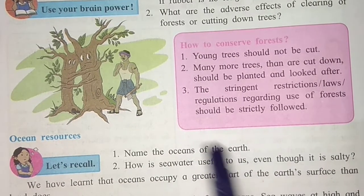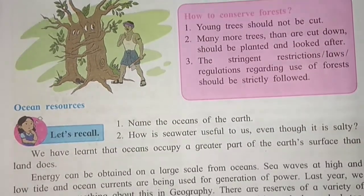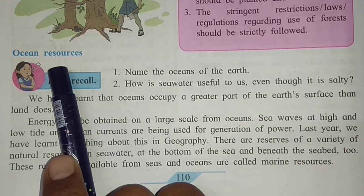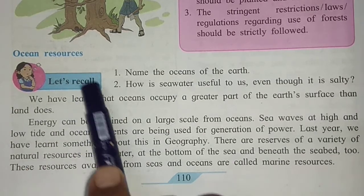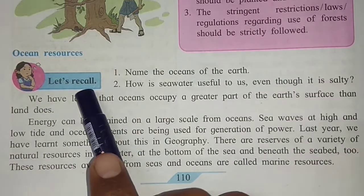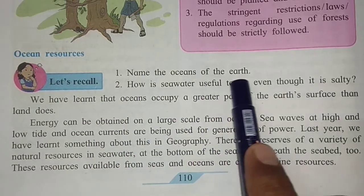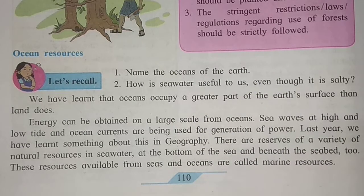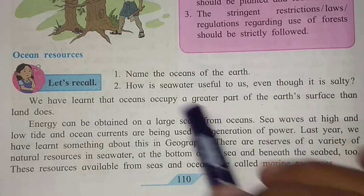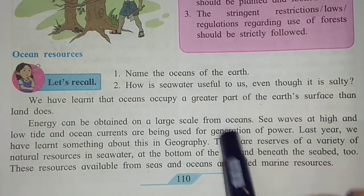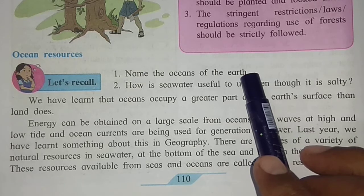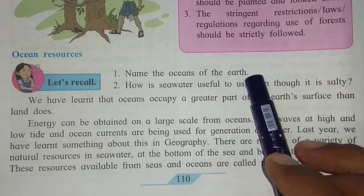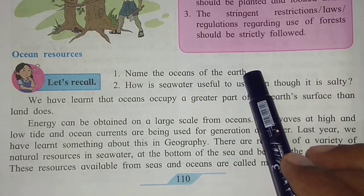This is all about forest wealth. Now let us move to ocean resources. So far we have seen forest resources; now ocean resources. A recall point: name the oceans of the earth. Total four oceans are there — Arctic Ocean, Atlantic Ocean, Indian Ocean, and Pacific Ocean. There is also a fifth ocean that has been discovered but has not yet come into the syllabus, so I cannot officially mention it.